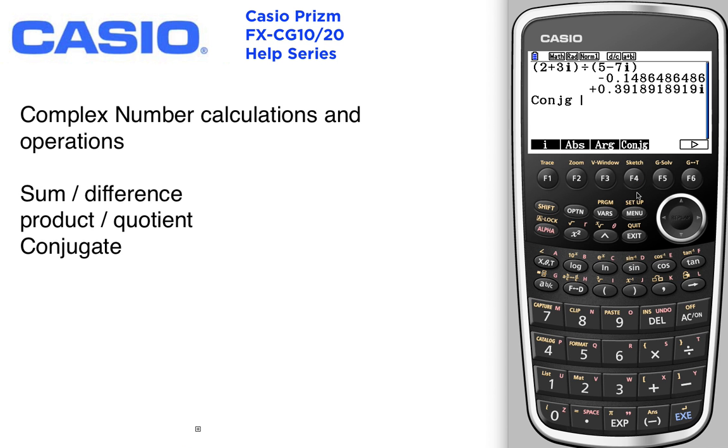You can also find the conjugate of a complex number, 2 plus 3i. And even the square root of complex numbers, 2 plus 3, shift i.